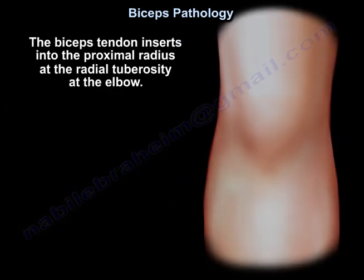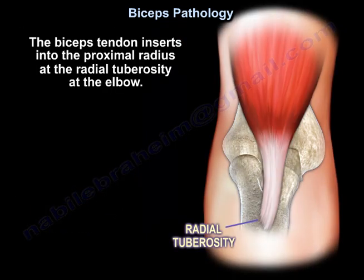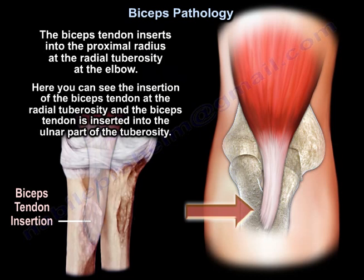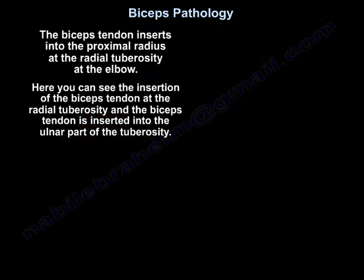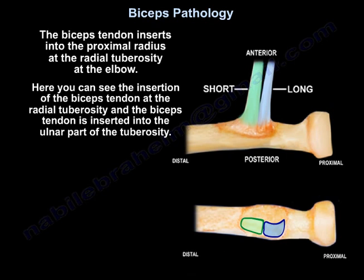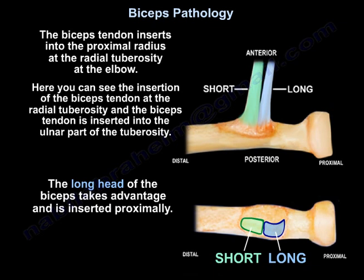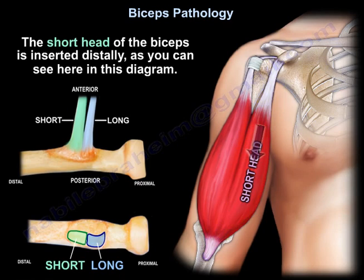The biceps tendon inserts into the proximal radius at the radial tuberosity at the elbow. Here you can see the insertion of the biceps tendon at the radial tuberosity — the biceps tendon is inserted into the inner part of the tuberosity. The long head inserts proximally, and the short head is inserted distally, as seen in this diagram.